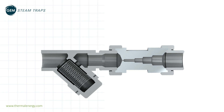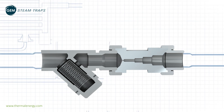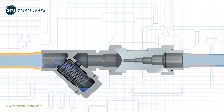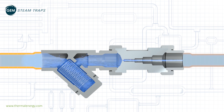At start-up, the steam system becomes pressurised and air and sub-cooled condensate jets through the gem trap's orifice unobstructed, freely discharging at two to three times maximum capacity.